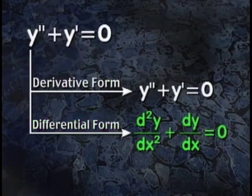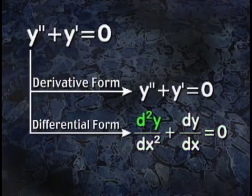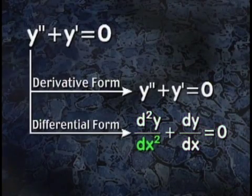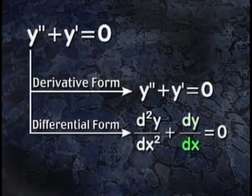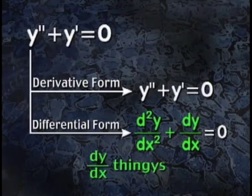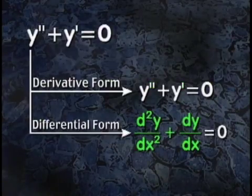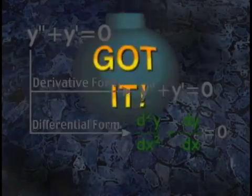In the differential form, it would look like this, with the dy-dx notation. It's read, the second derivative of y with respect to x plus the first derivative of y with respect to x equals zero. The dy-dx thingies tell you that you're looking at the differential form. So primey thingies, derivative form. dy-dx thingies, differential form. Got it?